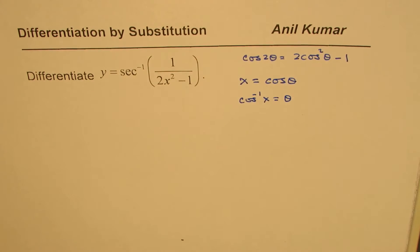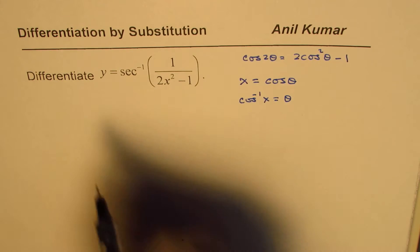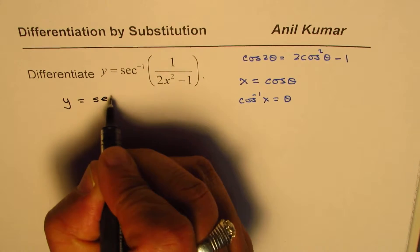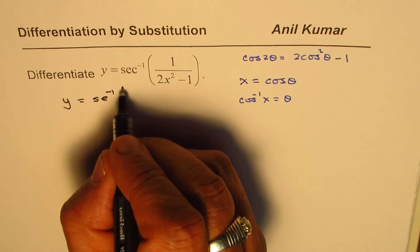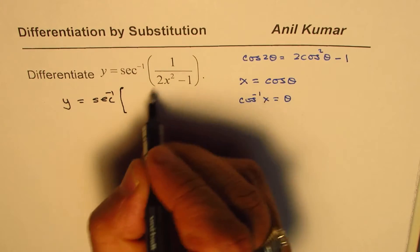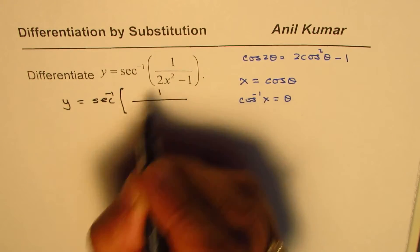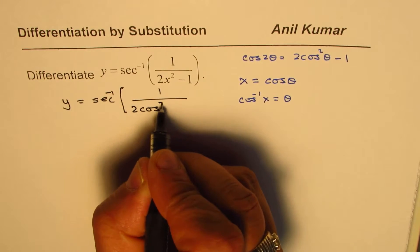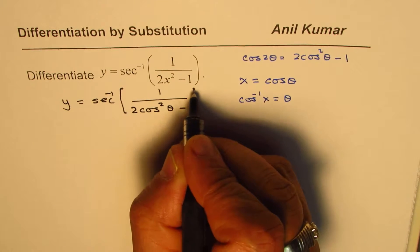That is the substitution which we are going to make. We'll rewrite this question as y equals to secant inverse. Instead of x, I'll write cos theta. So, we have 2 cos square theta minus 1.